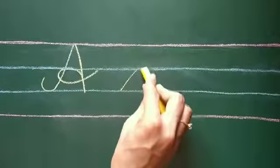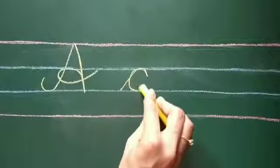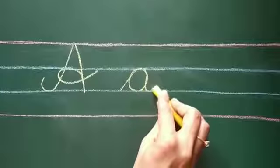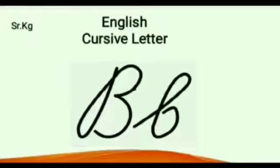Make a slanting line going up, make a circle, come down making a curved tail outwards. Cursive letter B.